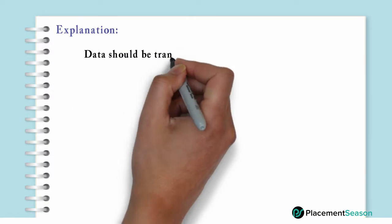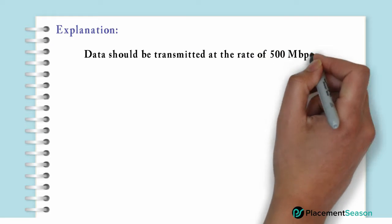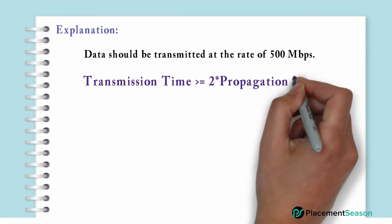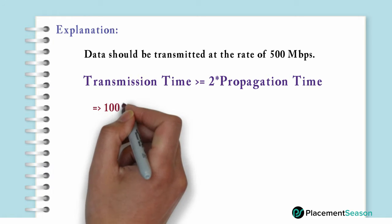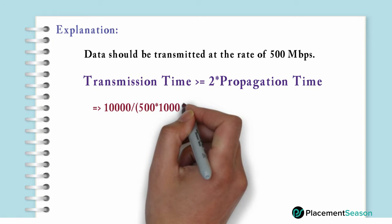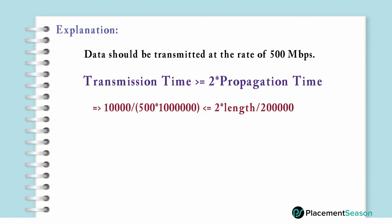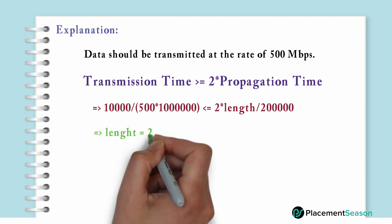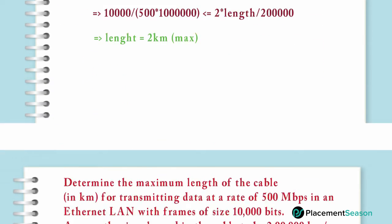Data should be transmitted at the rate of 500 Mbps. Transmission time is equal to 2 times the propagation time. After calculation, we will get the length as 2 km.